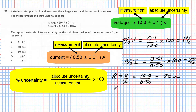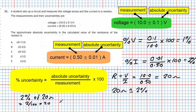I could write down that the value of the resistance from that measurement is 20 ohms plus or minus, and I'm going to take the biggest percentage uncertainty which is two percent. But I'm not asked for the percentage uncertainty — I'm asked for the absolute uncertainty. So I've got to find two percent of 20 ohms.